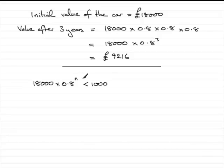First, we divide both sides by 18,000. This gives us 0.8^n < 1,000/18,000.